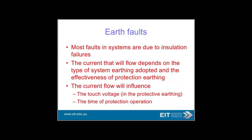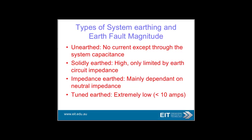Most faults in systems are due to insulation failures. The current flow depends on the type of system earthing adopted, and the current flow will influence touch potential and the time of protection operation. If unearthed, there is no current except through the system capacitance. If solidly earthed, very high current limited only by the circuit impedance. Impedance earthing uses neutral impedance to lower the current. Tuned earthing results in extremely low current.